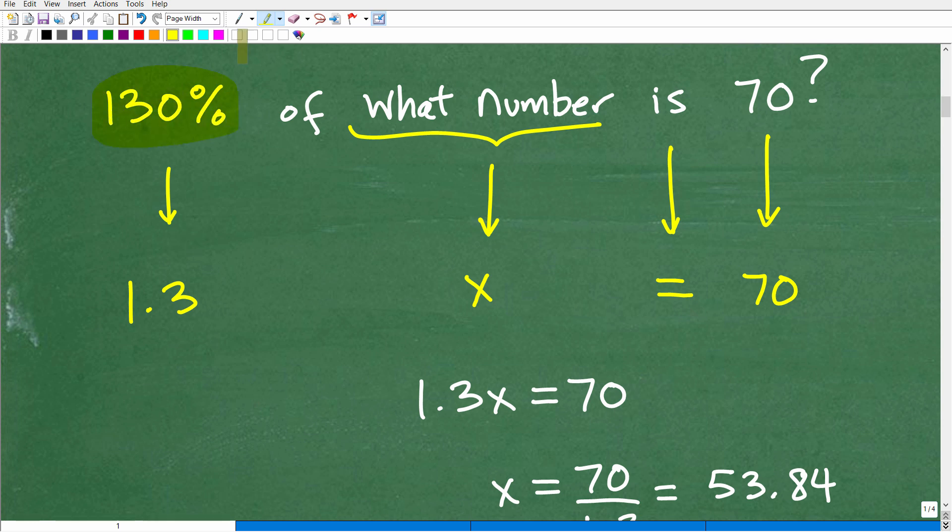So remember, what we're going to do when we're solving percent problems, we're going to change a percent into a decimal. So 130% is the same thing as 130. If you're wondering where the decimal point is at, it's always at the end of the number, right? So 130.0%. So if I move the decimal point two places to the left, I'm going to get 1.3.